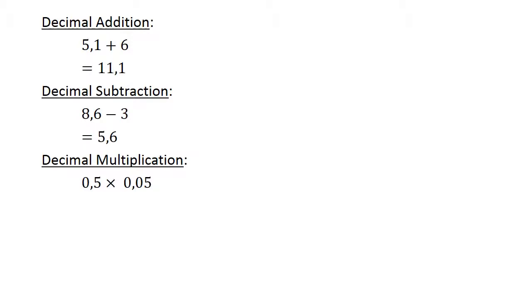Decimal Multiplication: 0.5 times 0.05 equals 0.025.